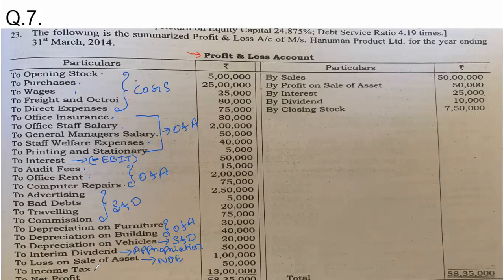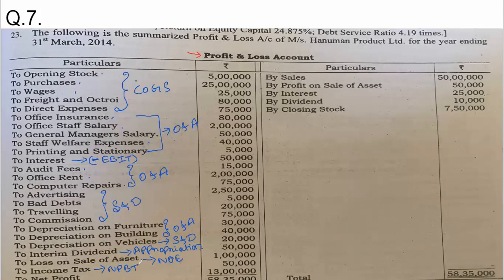From the NPBT, we are deducting income tax and loss on sale of asset. Why is loss on sale of asset a non-operating expense? Because selling assets is not the company's business. The asset became old, and when a loss occurs on an old asset, that is not a business loss. Therefore, it is considered a non-operating expense. Tax is deducted from NPBT.